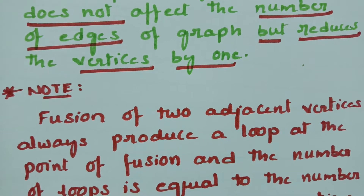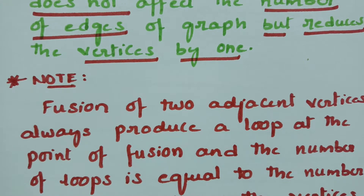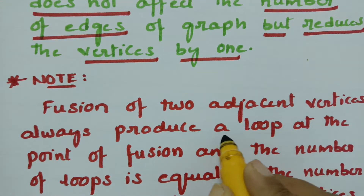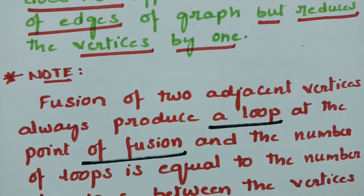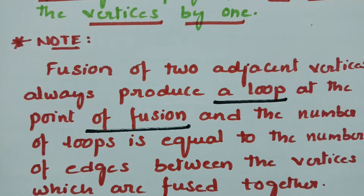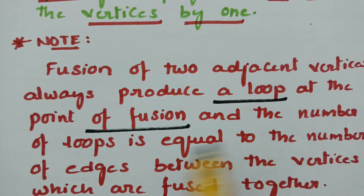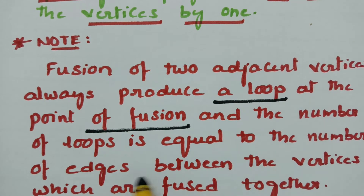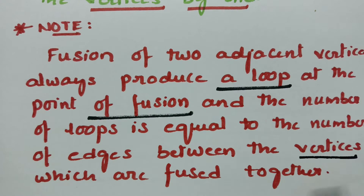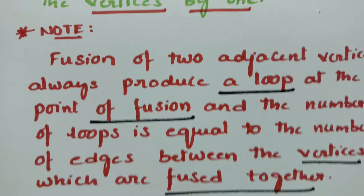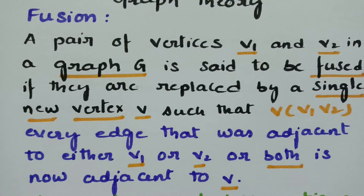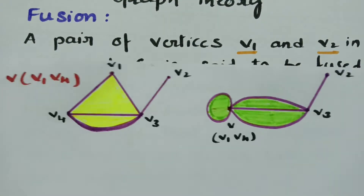The fusion of two adjacent vertices always produces a loop. Whenever there is a fusion, it is replaced by a loop at the point of fusion. Wherever the two vertices are fused, it produces a loop, and the number of loops equals the number of edges between the vertices which are fused together.